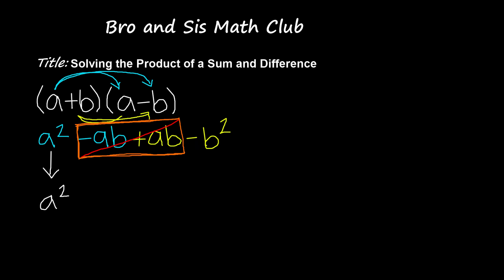So then we are left with negative b squared. So what we see here is that we have no need to do a times b and b times a. We can simply just follow this shortcut, which is a squared minus b squared. So we're gonna do a squared minus b squared.